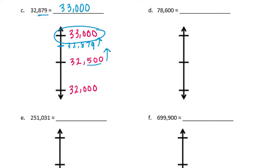78,600. I'm going to put 78,000 and 79,000. Right in the middle would be 78,500. Now 78,600 is going to be slightly above that 78,500. If we're judging is it closer to 79,000 or 78,000, we're rounding up to 79,000.